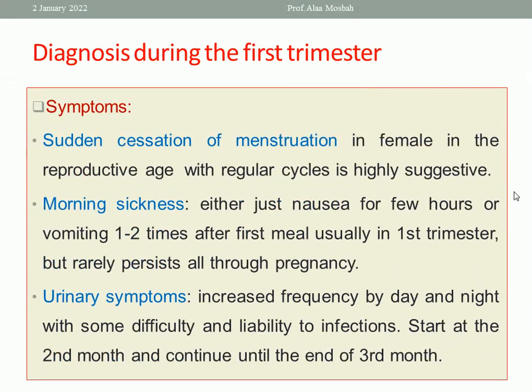During the first trimester, from taking history, doing examination and investigation — from symptoms like cessation of menstruation in a lady of child-bearing age with a previous regular cycle, then we have a missed period. This is highly suggestive that she may be pregnant if she is not using contraception. So you should put pregnancy in your mind.